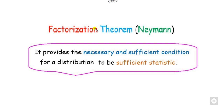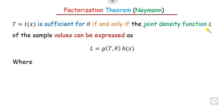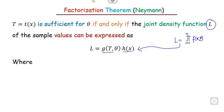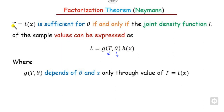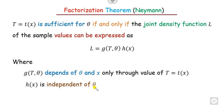The sufficient estimator can be found using the factorization theorem, which provides the necessary and sufficient condition. If you can express the joint likelihood function L in the form g(T, theta) * h(x), where g is a function depending on both theta and the statistic T (which is itself a function of x), and h(x) is a function totally independent of the population parameter theta, then T is sufficient.